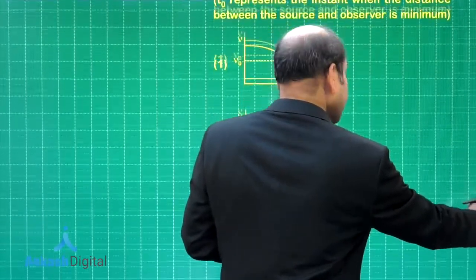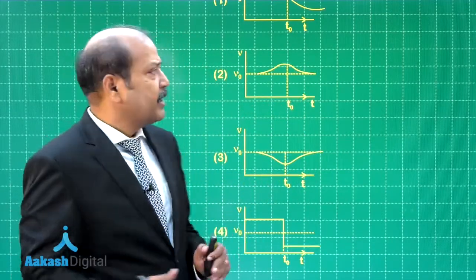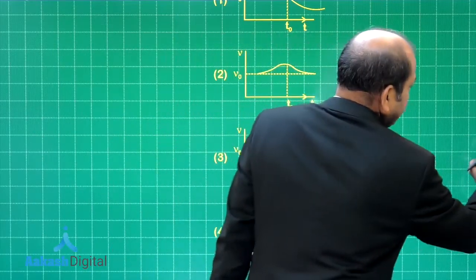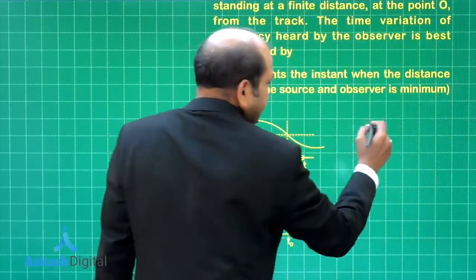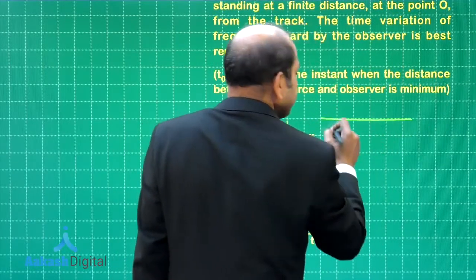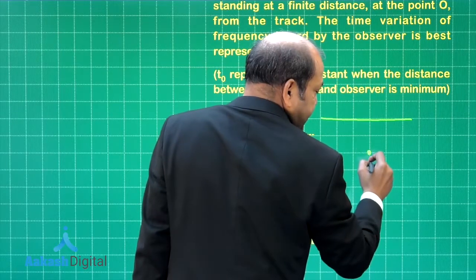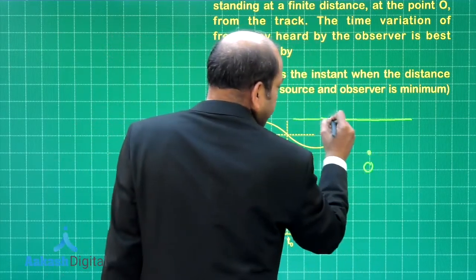There is no diagram given whereas there is a mention of the diagram but it is not given but the situation is pretty clear. Let us draw the situation. It is something like this that there is this track. Let us say that this is the track on which the source is moving and the observer is somewhere here. Here is the observer and the source is moving along this line.